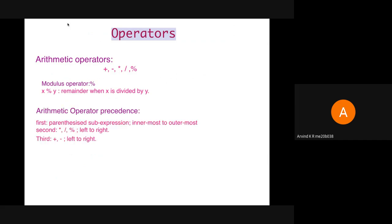Precedence of arithmetic operators is similar to the BODMAS rule. The first priority is given to the parentheses, and second priority is given to multiplication, division, and modulus. All three have the same priority and whichever comes leftmost gets executed first. Third priority is given to addition and subtraction. Even in this case, whichever comes leftmost gets executed first. For example, in b * c / d % e, first b * c is executed, then that is divided by d, and finally the modulus is taken with e.